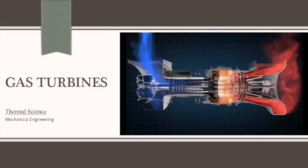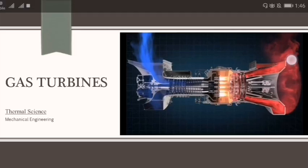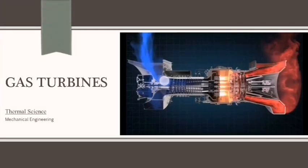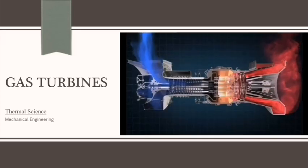We are going to discuss the topic of gas turbines. Basically, we are using the IC engine for producing power. The IC engine is a closed chamber where the air-fuel mixture will burn. Similarly, gas turbines work almost the same way. There is compressed air, a combustion chamber, and fuel is added. The high pressure air-fuel mixture expands to drive the turbine blades and produce power.